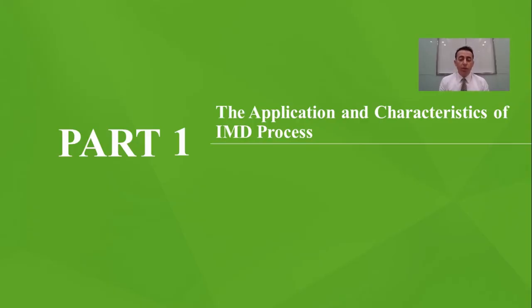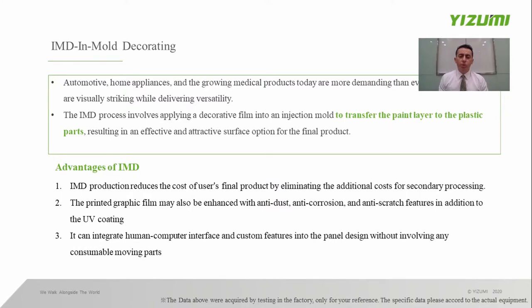Now let's go into details. Firstly, let's have a look at the IMD process. IMD is also known as in-mold decorating. By applying this process, patterns on the film are transferred to the surface of the product during the injection molding, decorating the surface, so that the surface of the product is usually striking and has some special features.